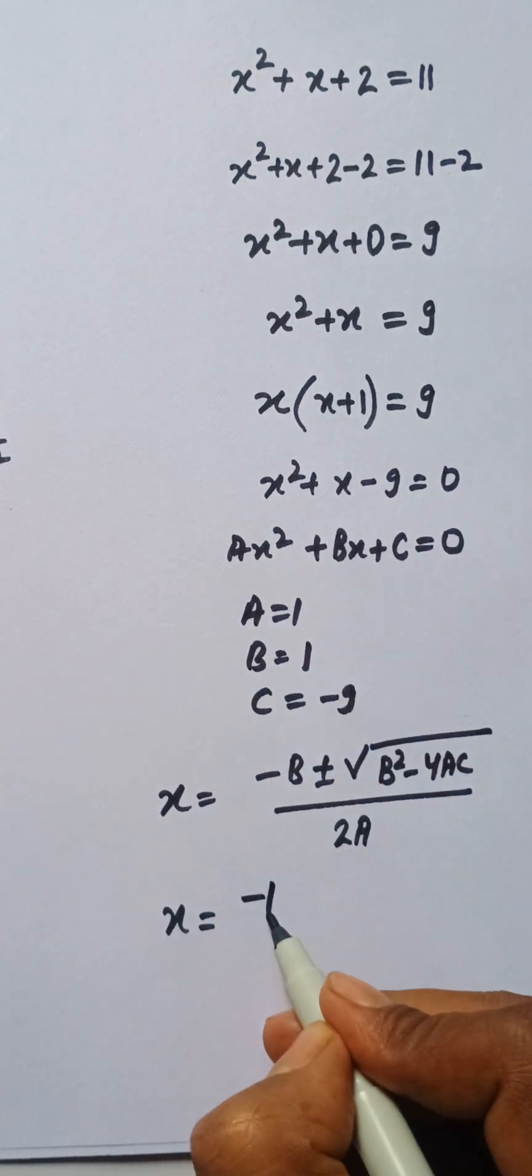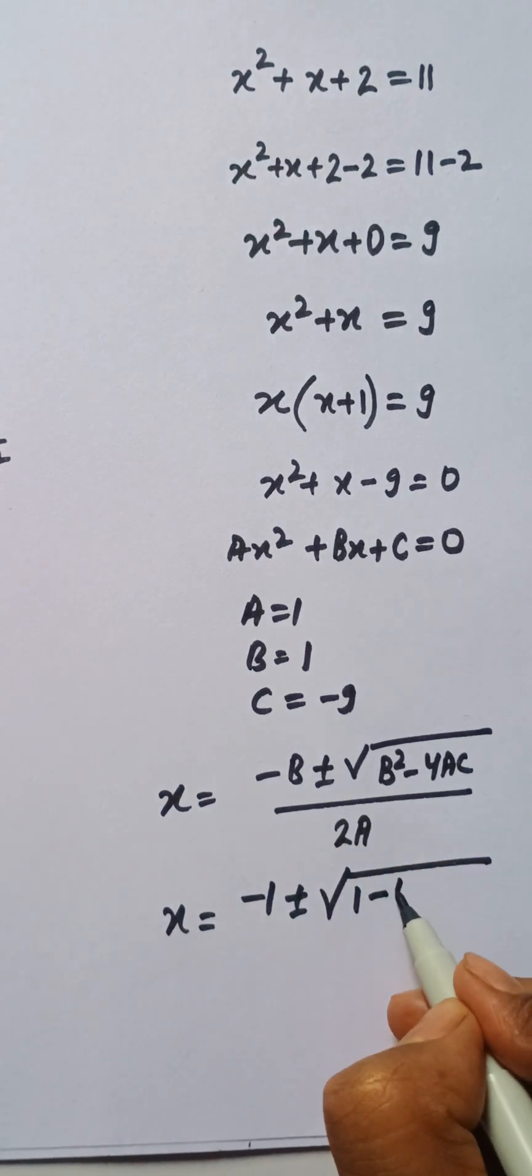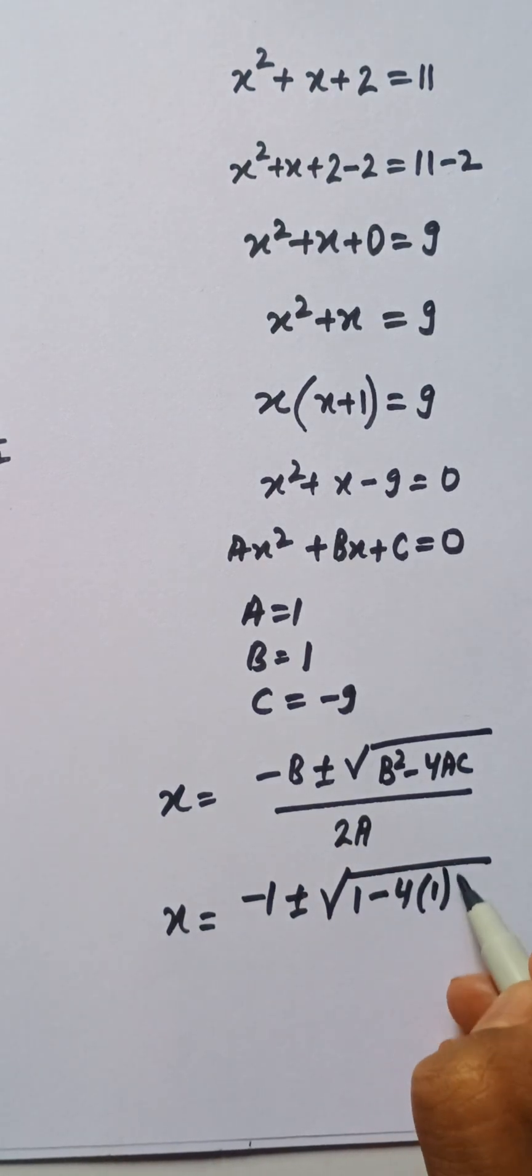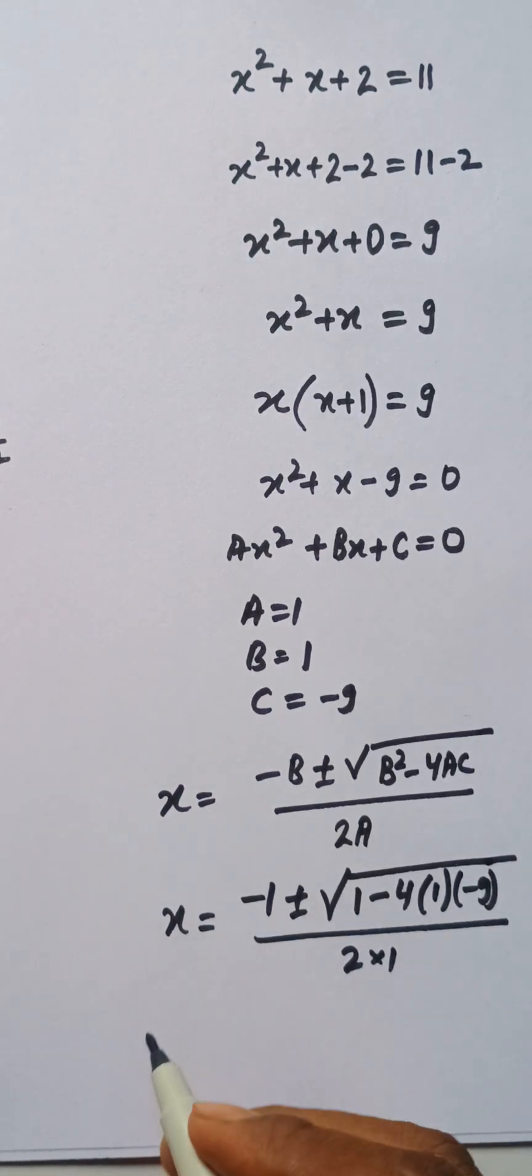We have x equals minus 1 plus or minus the square root of b squared is 1 minus 4 times a is 1 times c is minus 9, divided by 2 times 1.